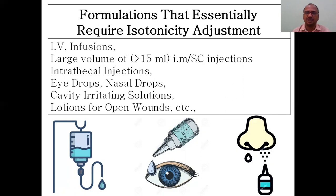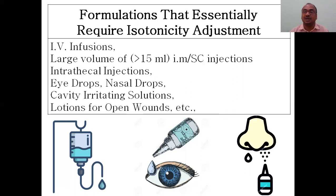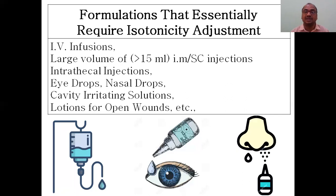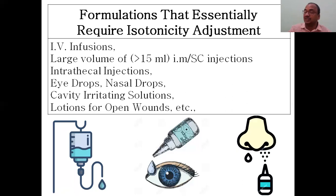Your nasal drops must match the isotonicity of nasal secretions. Your eye drop isotonicity must match with lacrimal isotonicity — the lacrimal fluids secreted by the gland. Fluids given through the IV route, that is IV infusion, must have the same isotonicity as blood. You have to maintain the same isotonicity with the corresponding solution: IV infusion with the blood, eye drops with lacrimal secretion, nasal drops with nasal secretion.